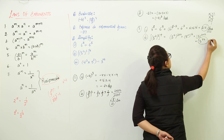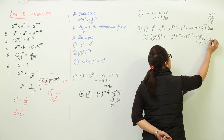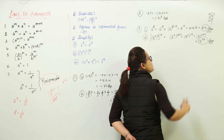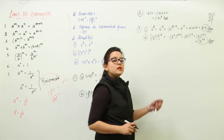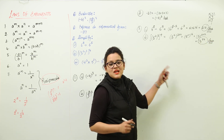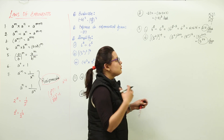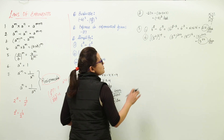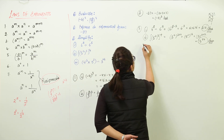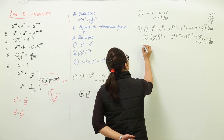Now when you have such big values, you can leave the answer as it is. Please do not go multiplying 5 twenty-four times — that would take a lot of time. You can leave the answer in exponential form.